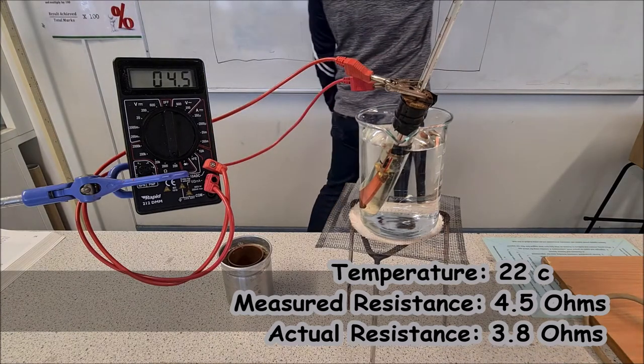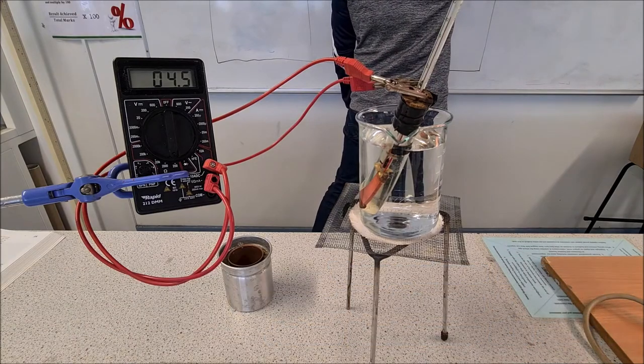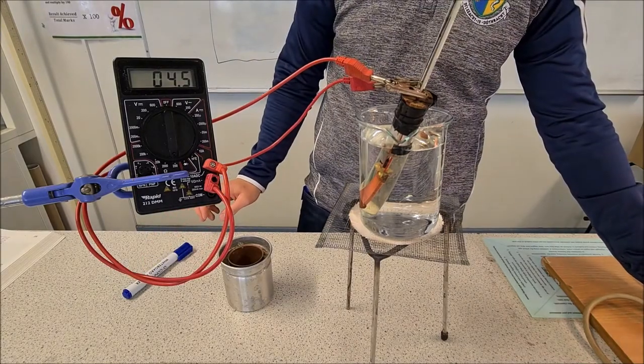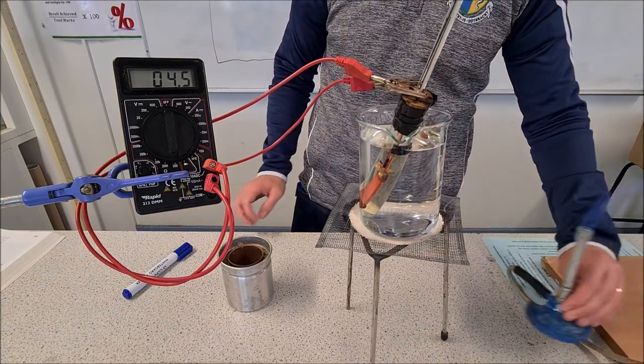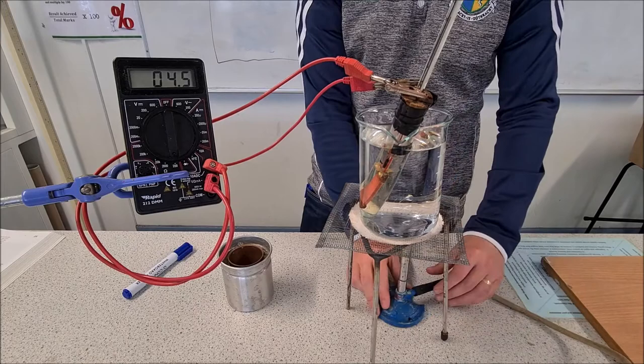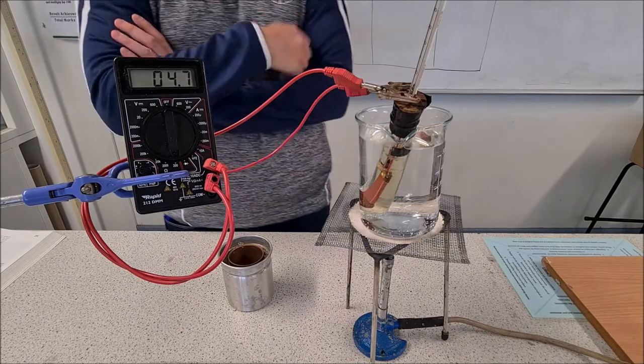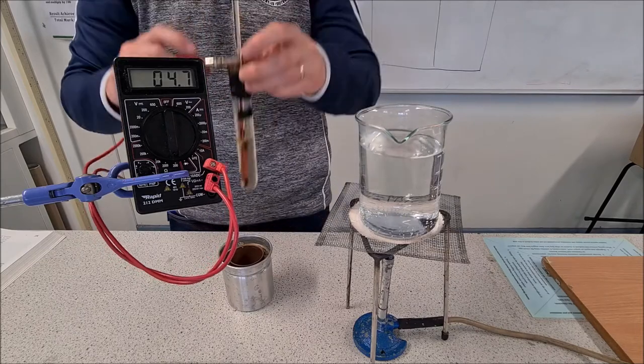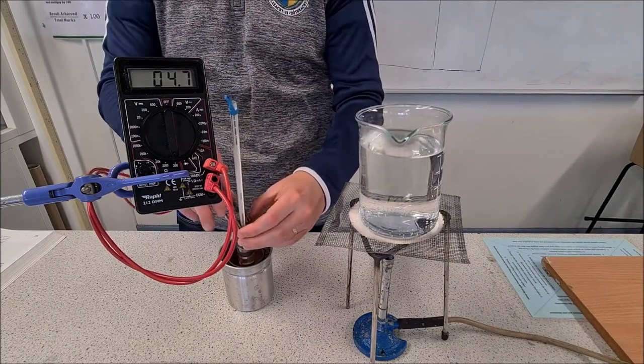We're going to put that Bunsen burner underneath and start heating it up. We're coming up on 30 degrees now so I'm going to take it out, let it rest in here so the temperature becomes stable.